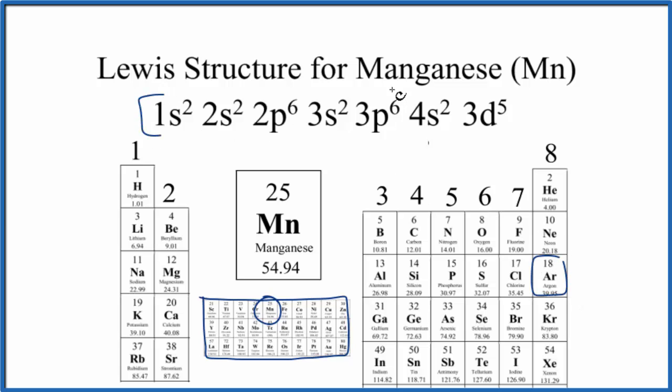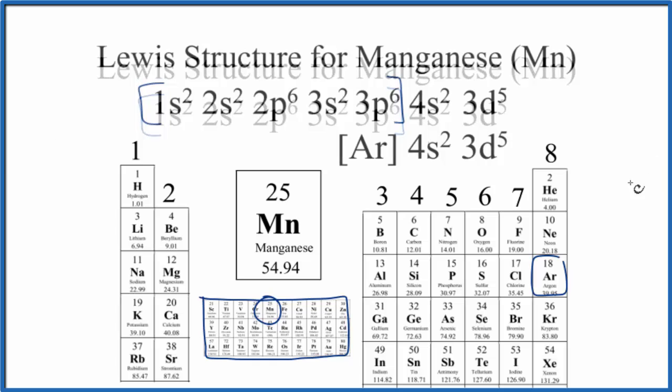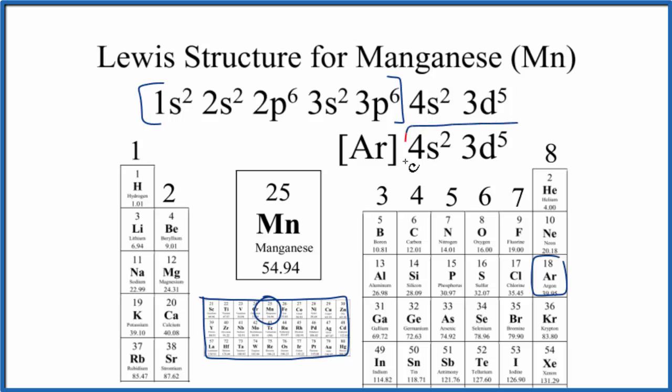We could put brackets around all of this, and this would be our noble gas core. Then we'd write the electron configuration like this. When we do that, we can see that our valence electrons are outside the noble gas core. These are the valence electrons for manganese.